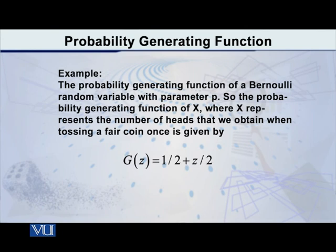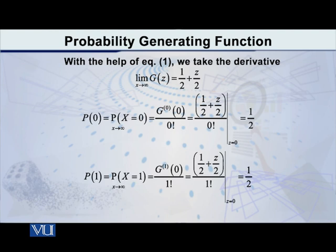Let me give you an example to explain this point. Considering the probability generating function of a Bernoulli random variable — when, for example, we are tossing a fair coin only once — the probability generating function for this case is given by 1/2 plus z/2. I want to find the probability that x is equal to 0. According to the formula, I have to find the 0th derivative of the PGF, then put z equal to 0, and divide by 0 factorial.